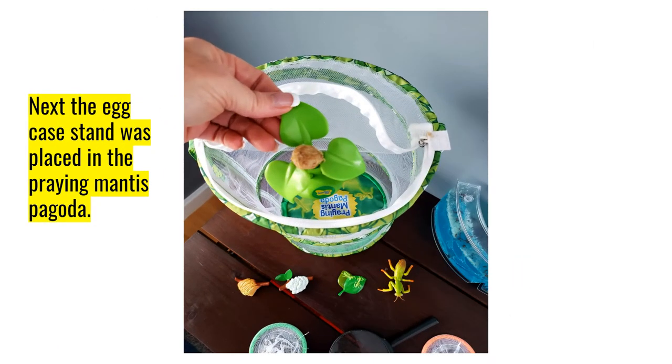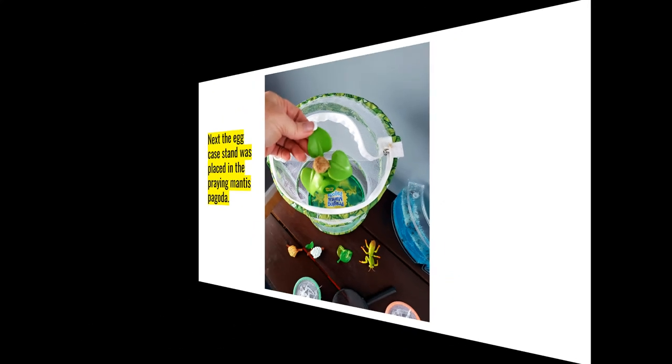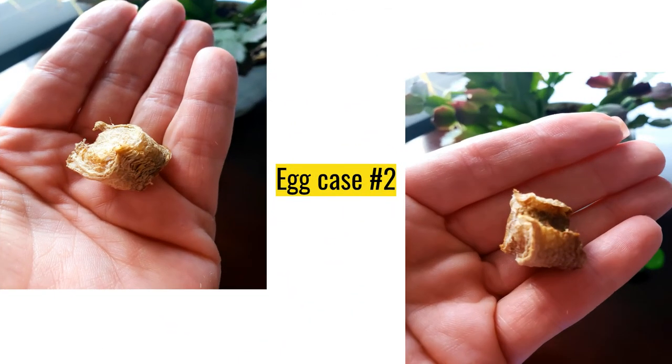Next, the egg case stand was placed in the praying mantis pagoda. So I take the little stand and I placed it inside the habitat. Now we have egg case number two. And as you see, even though it is a praying mantis egg case, it looks a little different from the first one. They are all unique in how each praying mantis makes their own case. So some of them are bigger, some of them are smaller, some of them have different shapes. So they're pretty interesting. But as you can see, you can still see the indent where this one was removed from a stem of a tree where the stem would be.